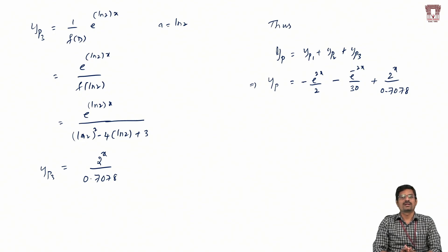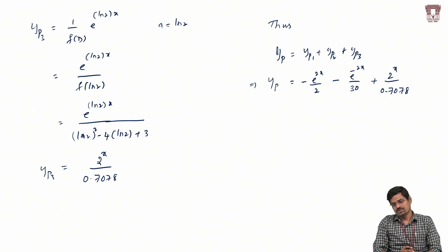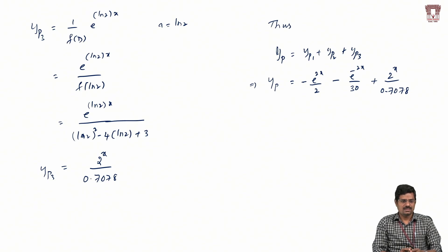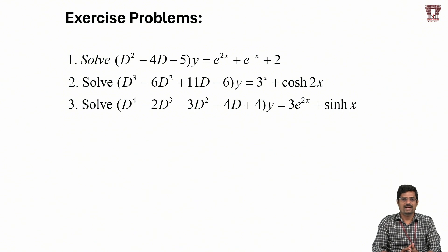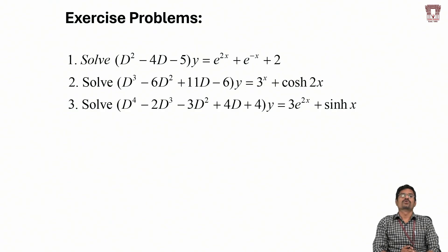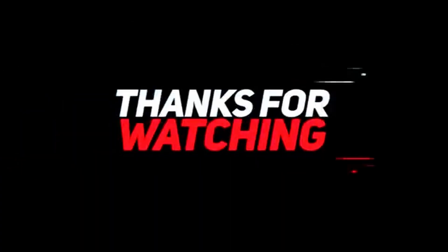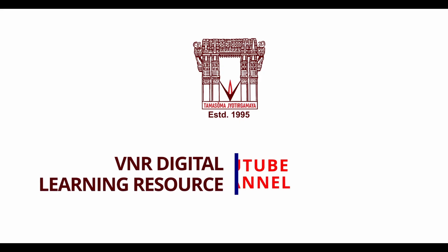In summary, Method 1 applies whenever Q(x), the right-hand side function, is of exponential form. We replace D with a, and depending on whether f(a) is zero or non-zero, we apply Case 1, Case 2, or Case 3. I hope you understood this method. Please try a few practice problems to prepare for the examination. We will cover the remaining methods in another video. Thank you very much — please like, share, comment, and subscribe to the VNR Digital Learning Resource YouTube channel.